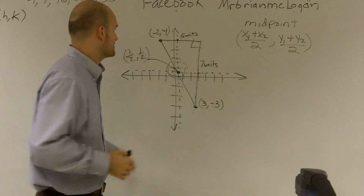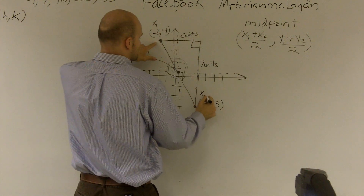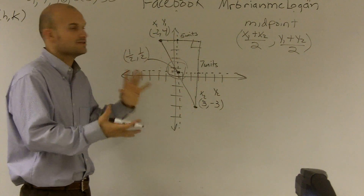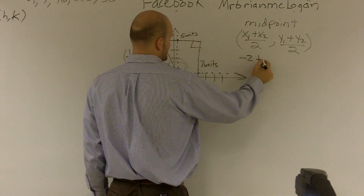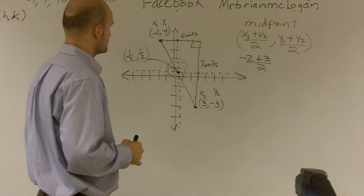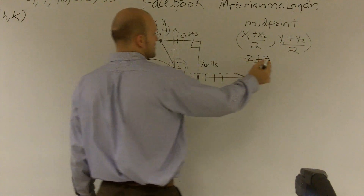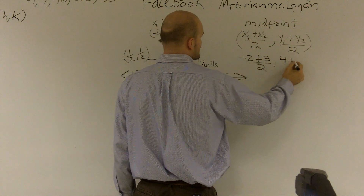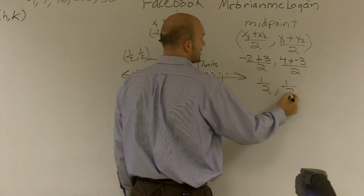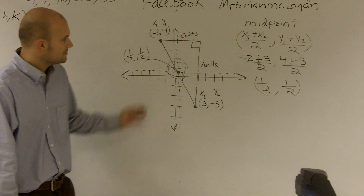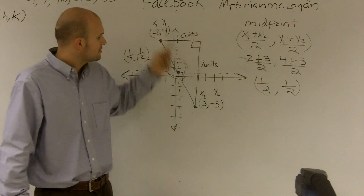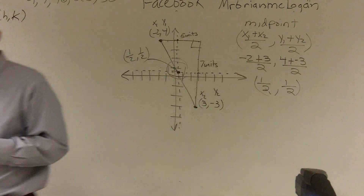Let's double check the math. x1 is negative 2, plus x2 which is 3, divided by 2. Then y1 is 4, plus a negative 3, divided by 2. It doesn't matter which one you call x1 or x2 or y1 or y2 — it's just the way to label them. Negative 2 plus 3 is 1, divided by 2 is one-half. So there you go — we found it both ways. If you have a graph, you can figure out the midpoint. Or if you just have your two coordinate points, you can use the midpoint formula.